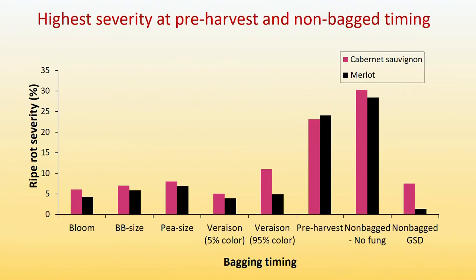This is the data. It was done with two cultivars — Cabernet Sauvignon and Merlot — which ripen differently at different times. The pre-harvest treatment resulted in higher disease severity than other treatments early in the season. There was not much difference in disease severity between treatments from bloom to veraison. This might indicate that control efforts targeting ripe rot may be better directed after veraison rather than early season.